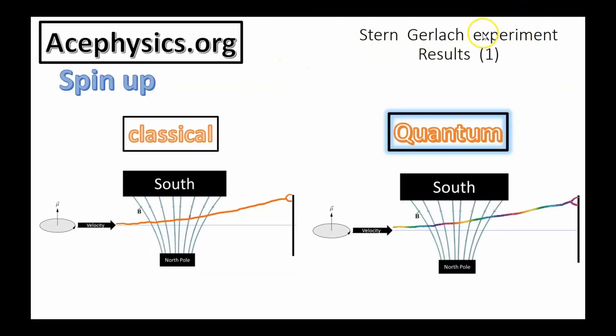Now let's discuss the Stern-Gerlach experiment in more detail. Imagine the particle is initially prepared with its magnetic moment pointing upward. In this state, it's sent with some velocity through the magnetic field. It will experience an upward force due to the interaction between its magnetic moment and the magnetic field gradient. Classically, this would predict the particle being deflected upward and detected at the top of the screen. In this scenario, there is no discrepancy between the classical and quantum predictions — the particle is observed at the top of the screen, and classical theory agrees.